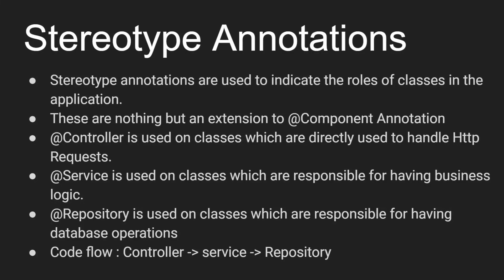Stereotype annotations are used to indicate the roles of classes in the application. There are a large number of classes present in an enterprise application, and to increase readability we use stereotype annotations. Controller, Service, and Repository are the three main types of stereotype annotations used to define the roles of those classes so that readability can increase.